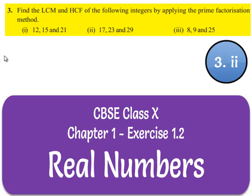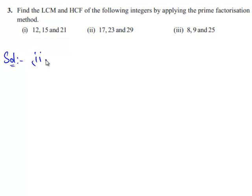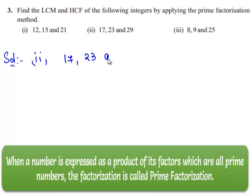Now let us move on to the second bit of the question. The three numbers given in the second bit are 17, 23 and 29.